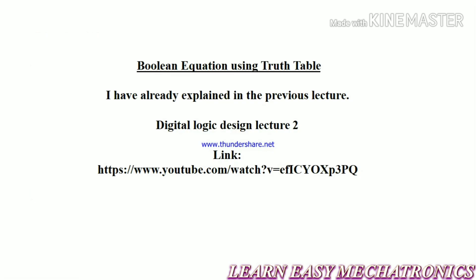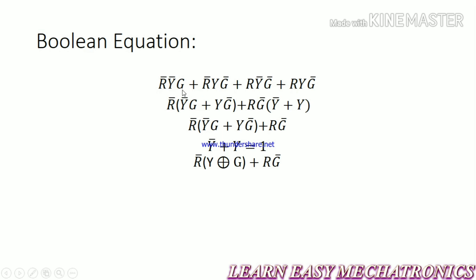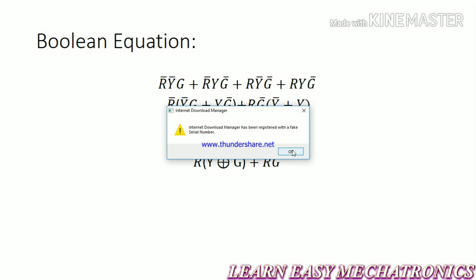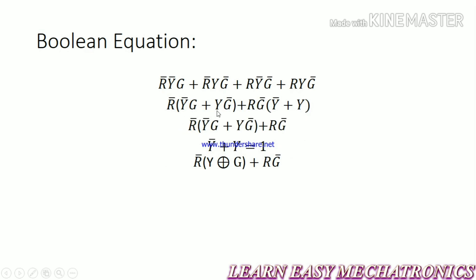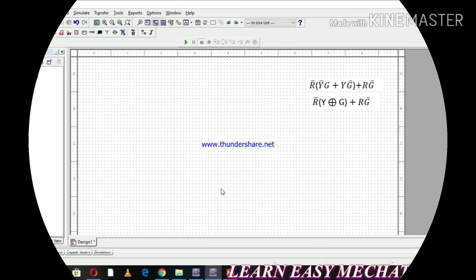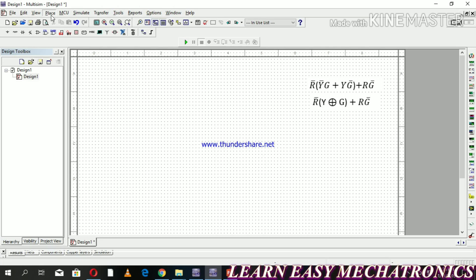Now we are going to get the boolean equation using a truth table. In the previous lectures I have already explained this in the digital logic design lecture — the link is given below. Consider those possibilities where the output is high, taking R-bar and RG-bar common. Using the boolean algebra property, Y plus Y-bar equals one, Y-bar·G plus Y·G-bar equals an XOR gate. I have copied the equations here.